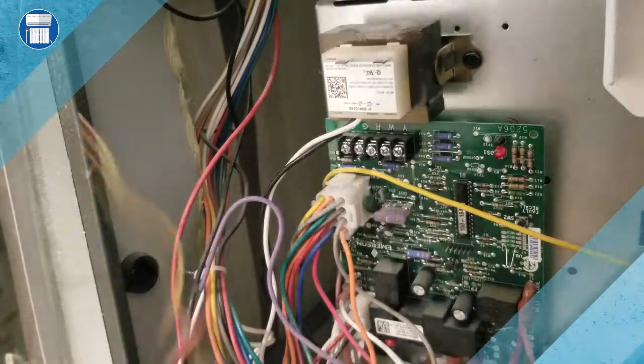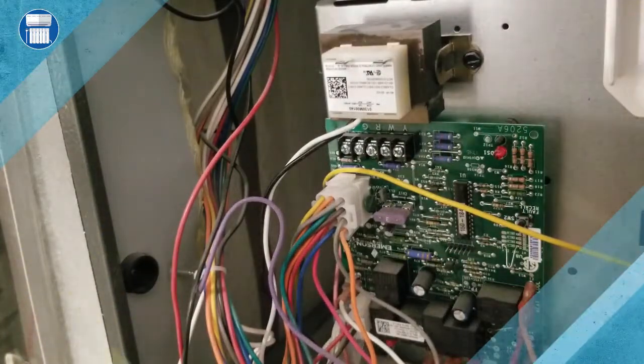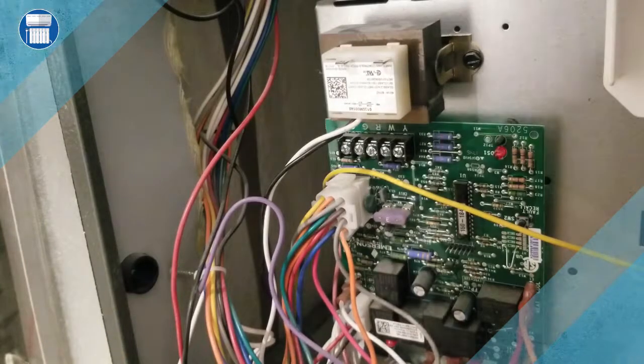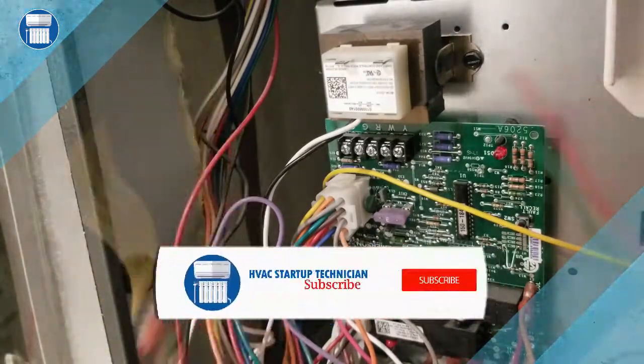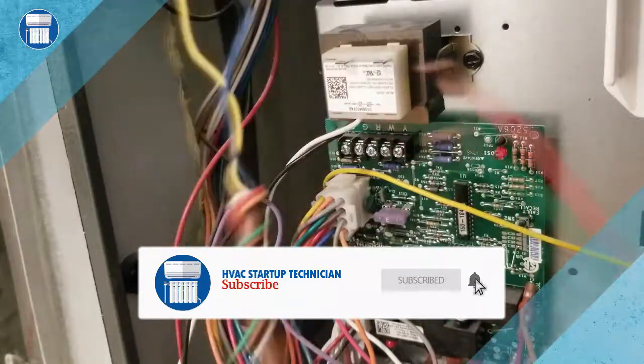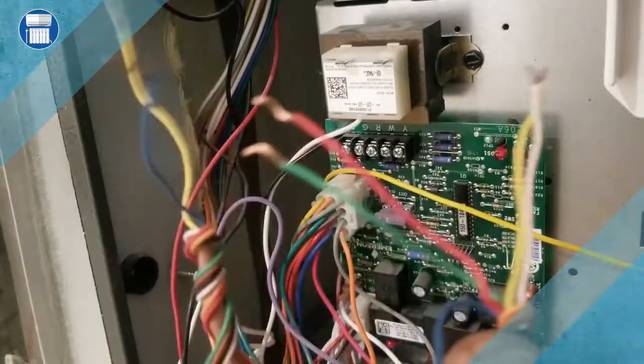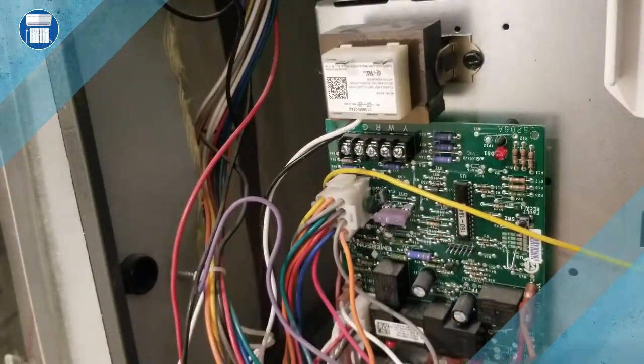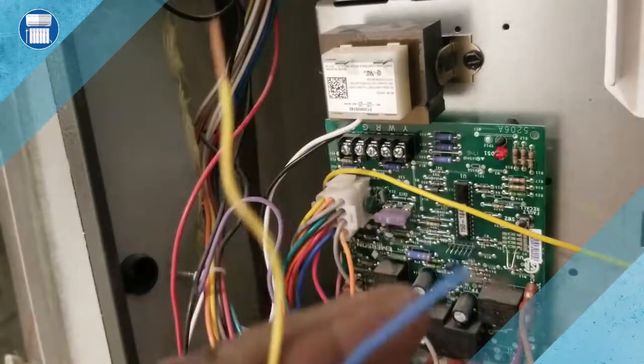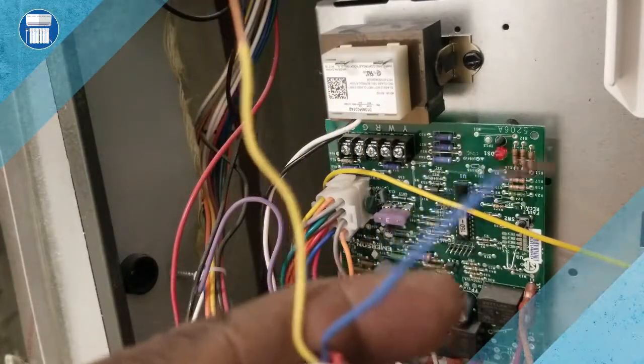Now, the first thing we're going to connect - we have two sets of wires. This wire here, these five wires I have here, go to the thermostat. These two wires go to the outside, to the condenser.